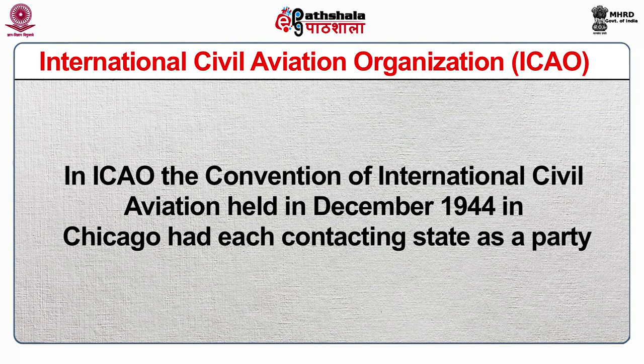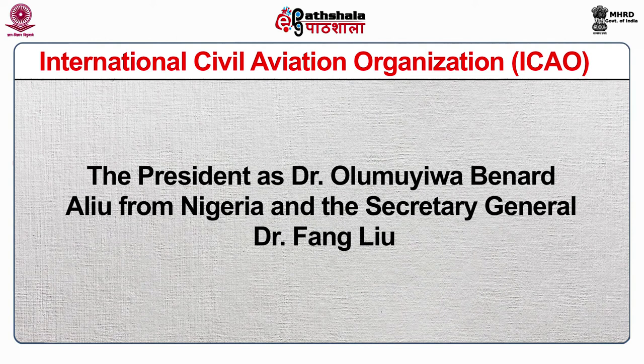How ICAO works: In ICAO, the Convention of International Civil Aviation held in December 1944 in Chicago had each contracting state as a party. The President is Dr. Bernard Aliu from Nigeria and the Secretary General is Dr. Fang Liu. The Assembly had representatives from all contracting states meeting every three years to detail works, policies, triennial budget and choosing new heads of Council for the coming years. The Council is assisted by the Air Navigation Commission for Technical Matters, the Air Transport Committee for Economic Matters, the Committee on Joint Support of Air Navigation Services, and the Finance Committee.